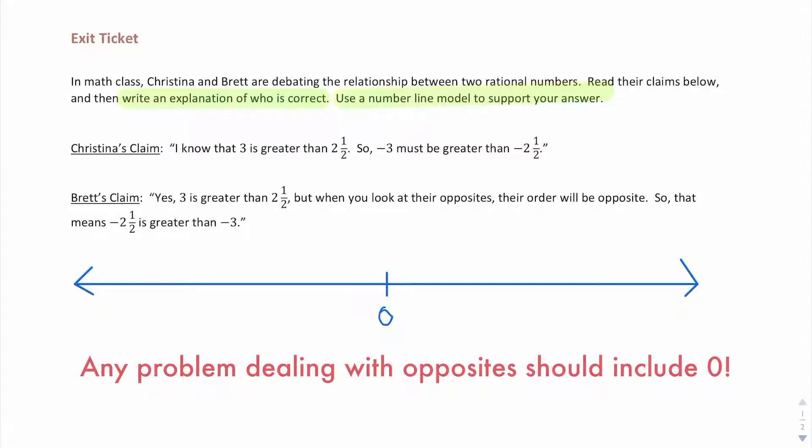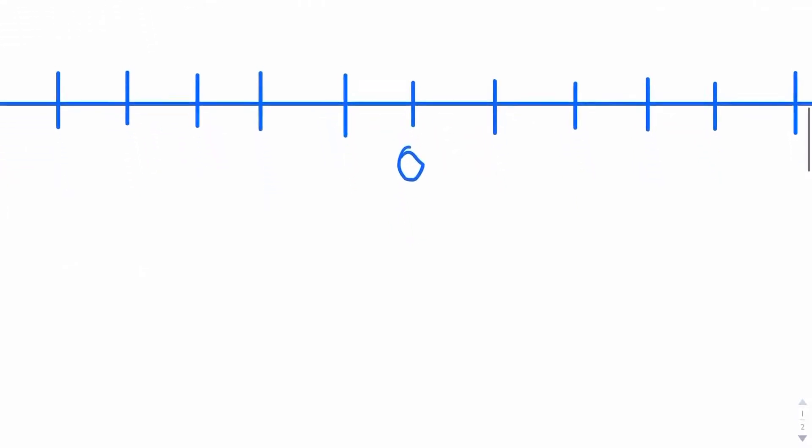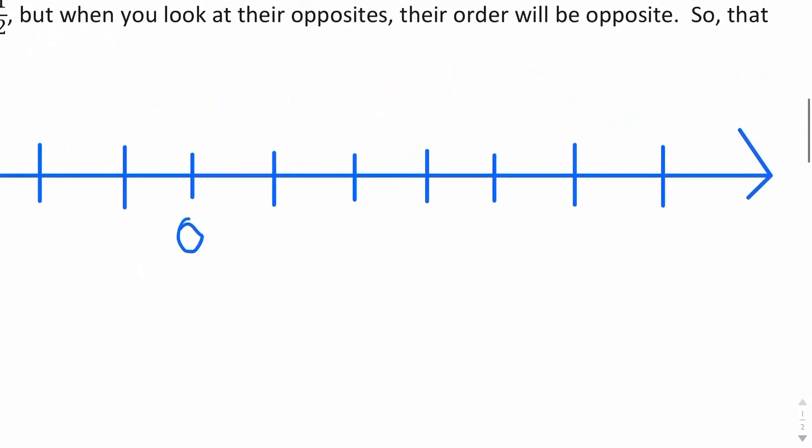And because we're dealing with halves, I am going to count by half. In order to get up to 3, I'm going to need 6 halves. And I'm going to go ahead and include that in the opposite direction. Now to number it, once again, I'm counting by half. So I want to make sure that I use halves.